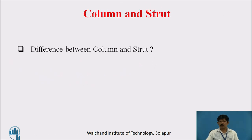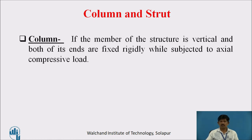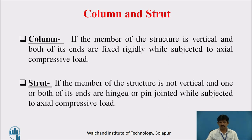What is the difference between a column and a strut? A column is a compression member which is vertical and both its ends are fixed rigidly while subjected to axial compressive load. A strut is also a compression member but is not vertical, and one or both of its ends are hinged or pinned while subjected to compressive load.